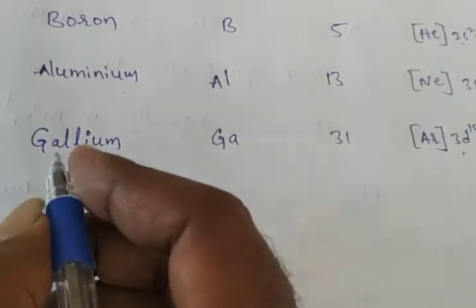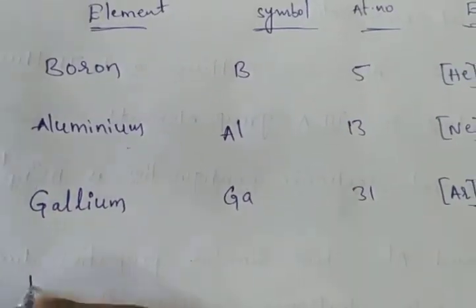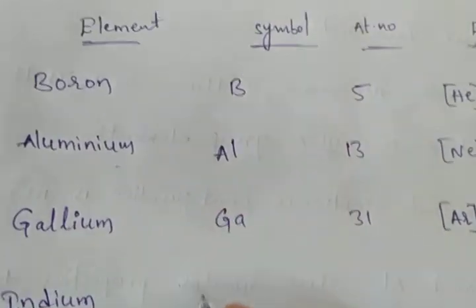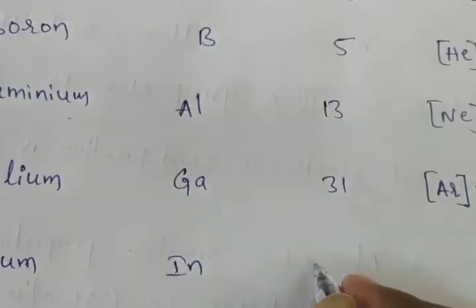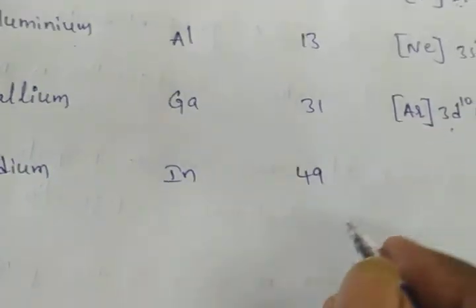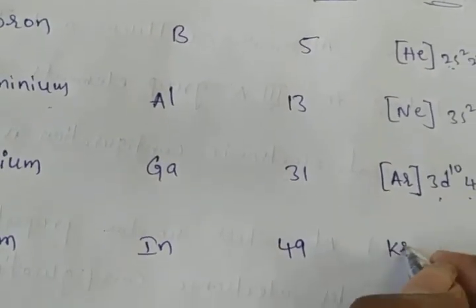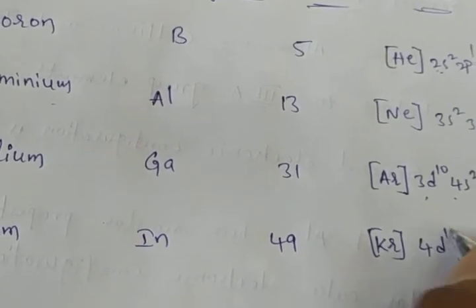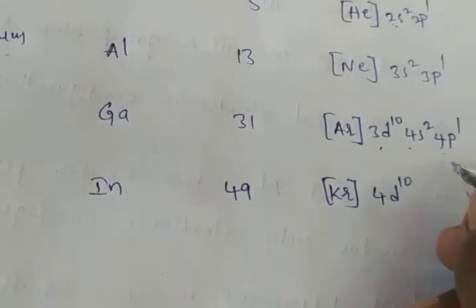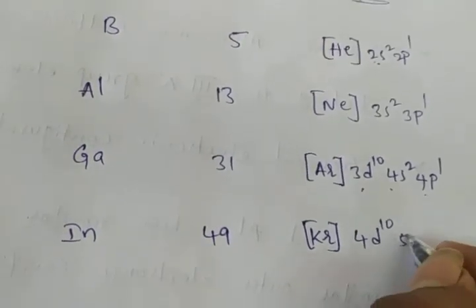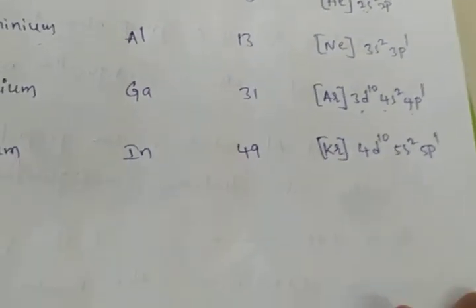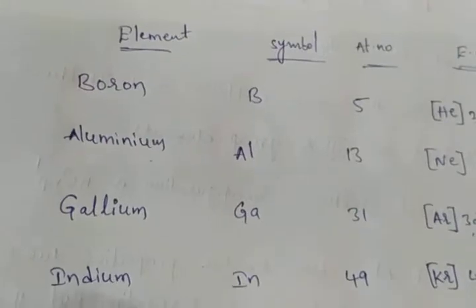After gallium, the next element is indium. The symbol is In and the atomic number is 49. The electronic configuration is [Kr] 4d¹⁰ 5s² 5p¹.